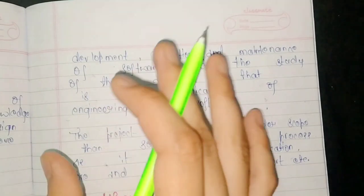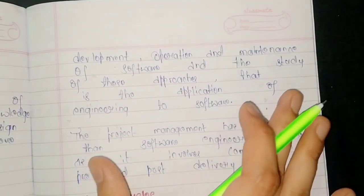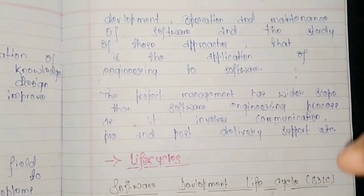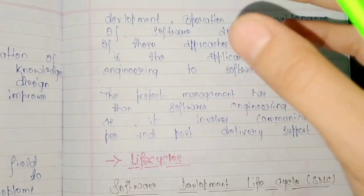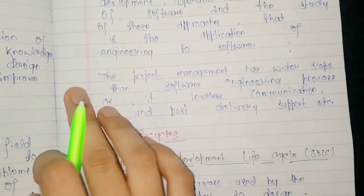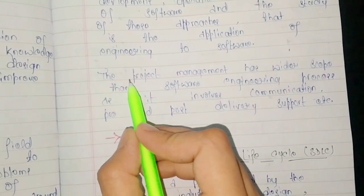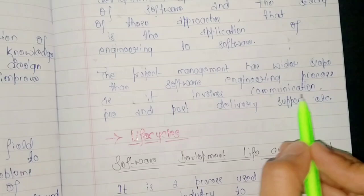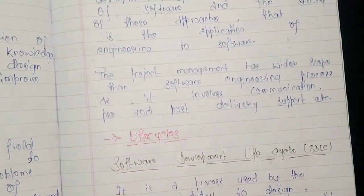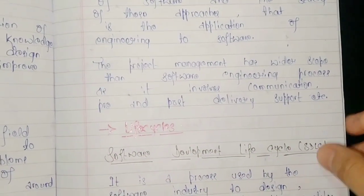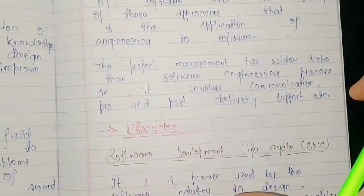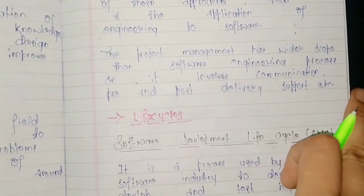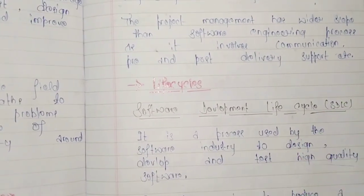So we can define software engineering in one way: we involve a lot of processes and develop software applications. The second thing about software engineering is that project management has wider scope than the software engineering process as it involves communication, pre and post delivery support, etc. Project management is a wide range as compared to software engineering process.